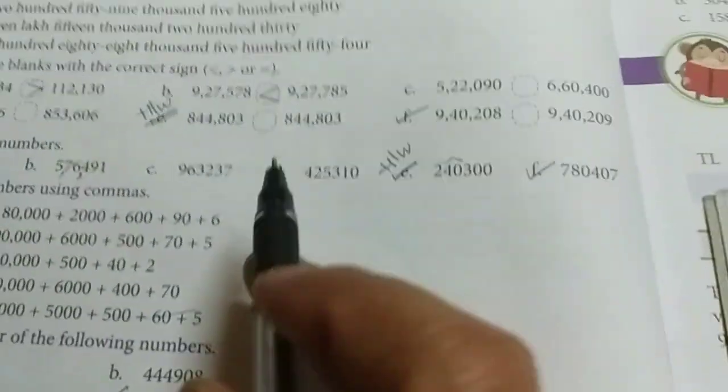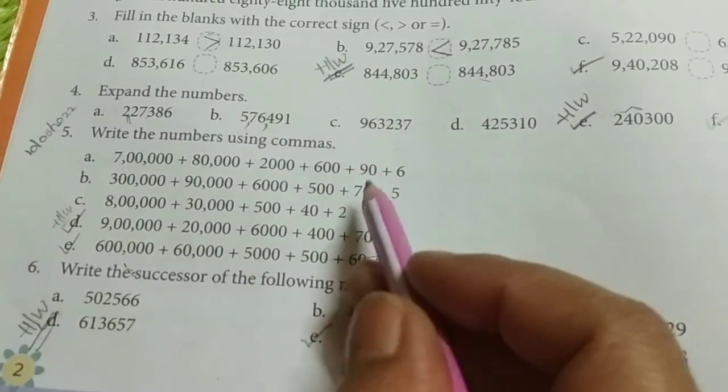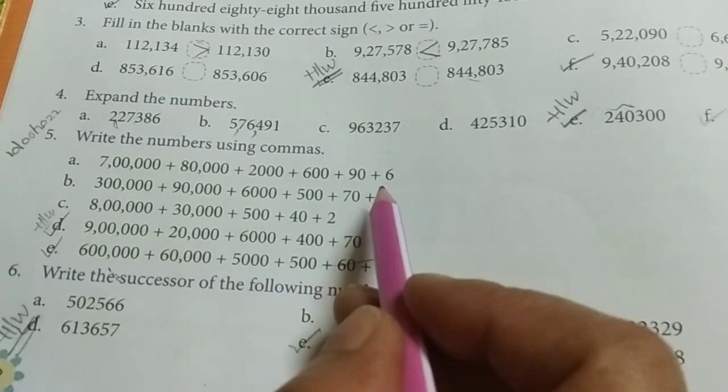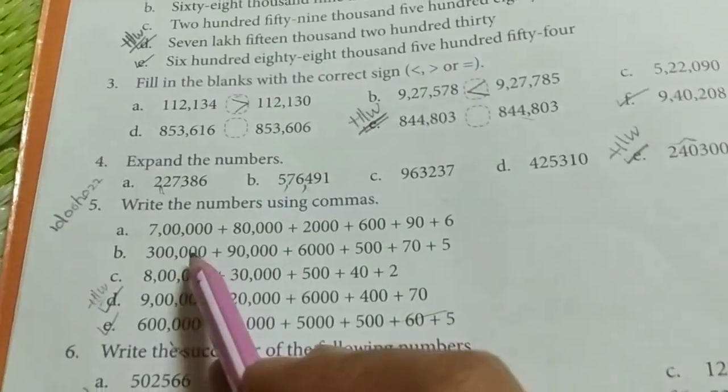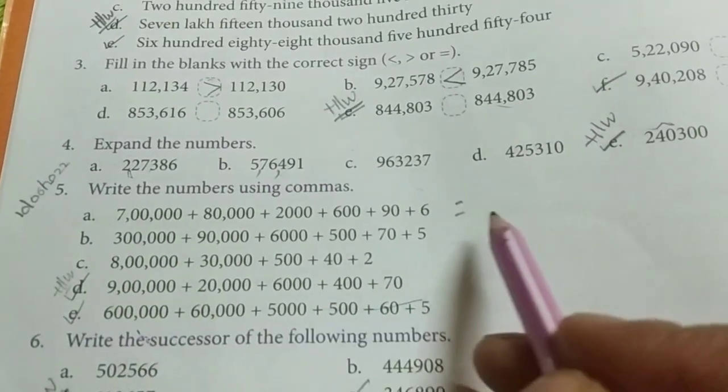Remaining all you have to solve. Next, write the numbers using commas. In expanded form, the number is given. You have to write the numeral. So, we will solve this one.